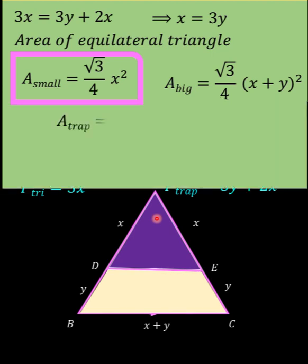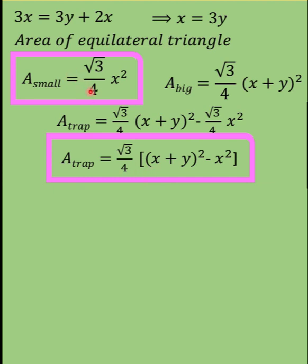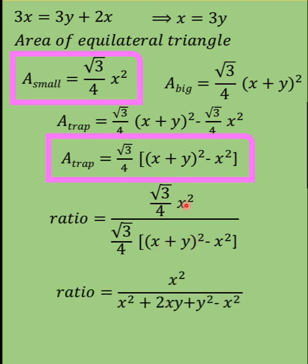So the area of the trapezoid equals the area of the big equilateral triangle minus the area of the smaller equilateral triangle. After simplification, we get the ratio as X² over [(X + Y)² − X²]. The (√3 / 4) terms cancel out. Expanding (X + Y)² gives X² + 2XY + Y², and subtracting X² leaves 2XY + Y². So the ratio is X² over (2XY + Y²).